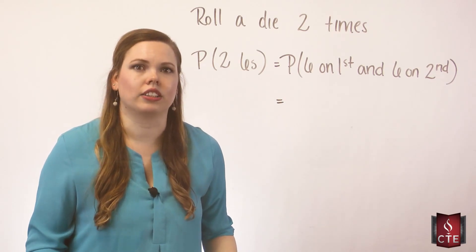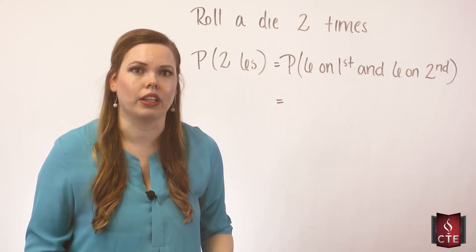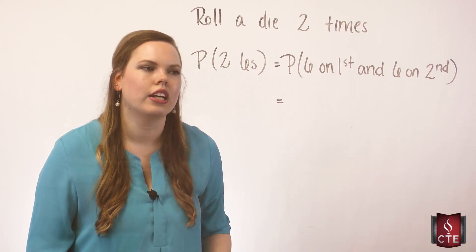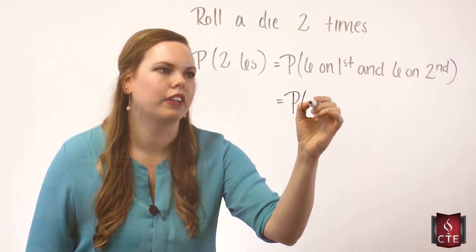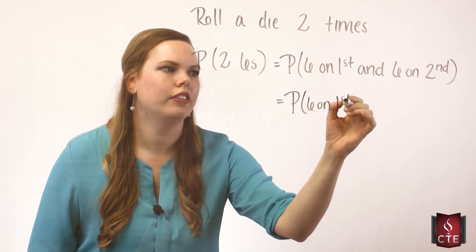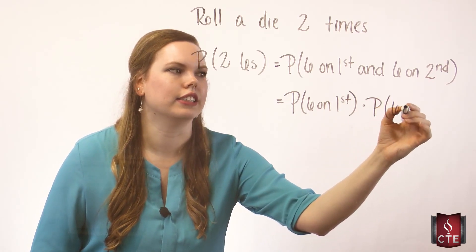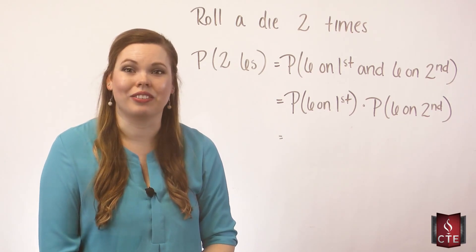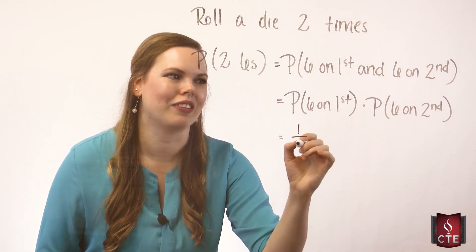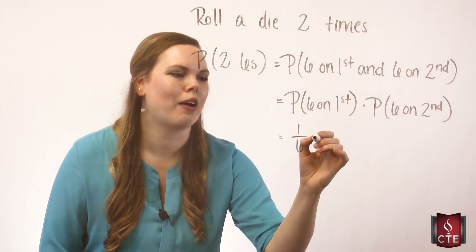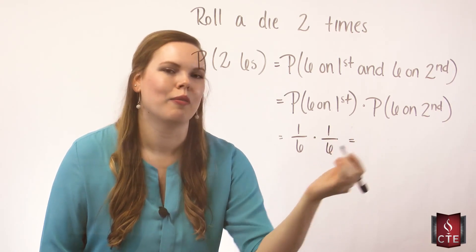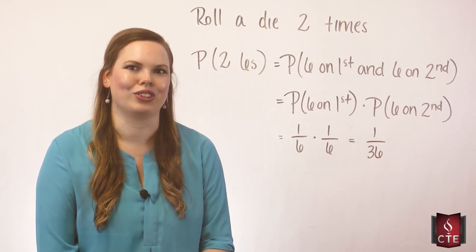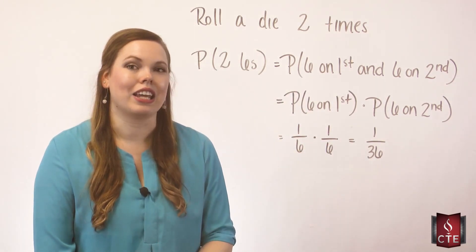Now we ask: are these events independent? Die rolls are independent because the die resets each time you roll it. So we take the probability of a six on the first roll times the probability of a six on the second roll. The probability of a six is one out of six every time. So one out of six times one out of six gives us one out of 36 - that's our chance of rolling two sixes.